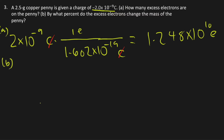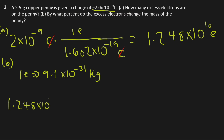Part B asks what percentage do the excess electrons change the mass of the penny? You know the total number of electrons, so you can calculate the total mass of the electrons. One electron has a mass of 9.1 times 10 to the negative 31st kilograms. After calculating the total mass of the electrons, divide by 2.5 grams, converting grams to kilograms by dividing by 1000. The total number of electrons is 1.248 times 10 to the 10th power, and one electron has a mass of 9.1 times 10 to the negative 31st kilograms.